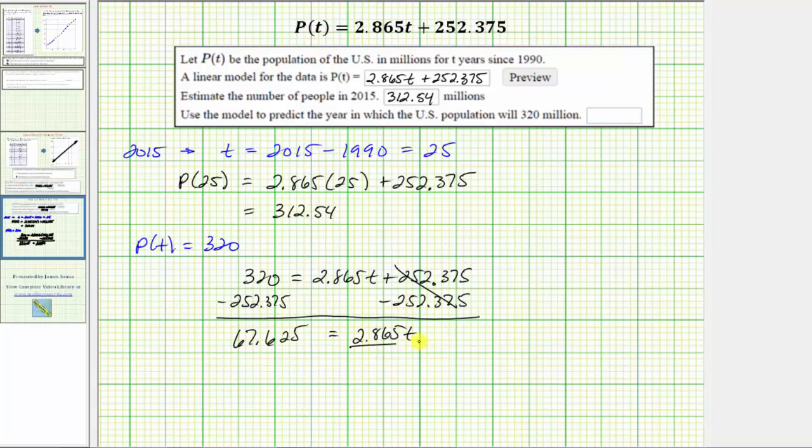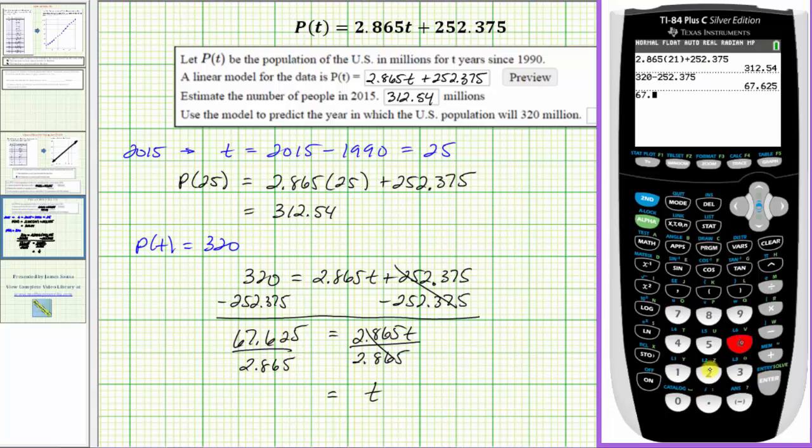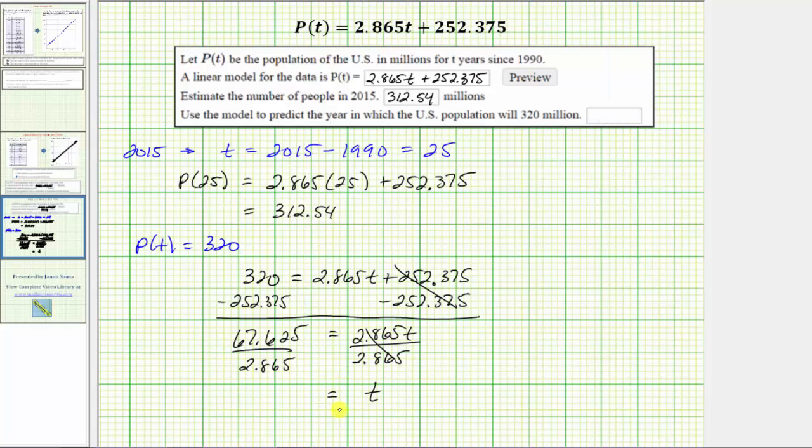The last step to solve for T is to divide both sides by 2.865. So on the right side, this simplifies to just T. Now we'll find this quotient. 67.625 divided by 2.865 is approximately 23.6. So according to the model, the population will reach 320 million approximately 23.6 years since 1990.